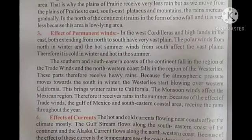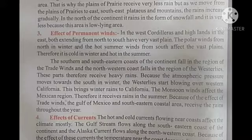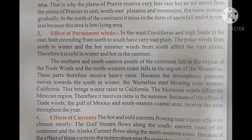Regarding the effect of permanent winds: the Cordillera in the west and the highlands in the east both extend from north to south, leaving very vast plains in between. The polar winds from the north in winter and the hot summer winds from the south affect the plains. Therefore, it is cold in winter and hot in summer.